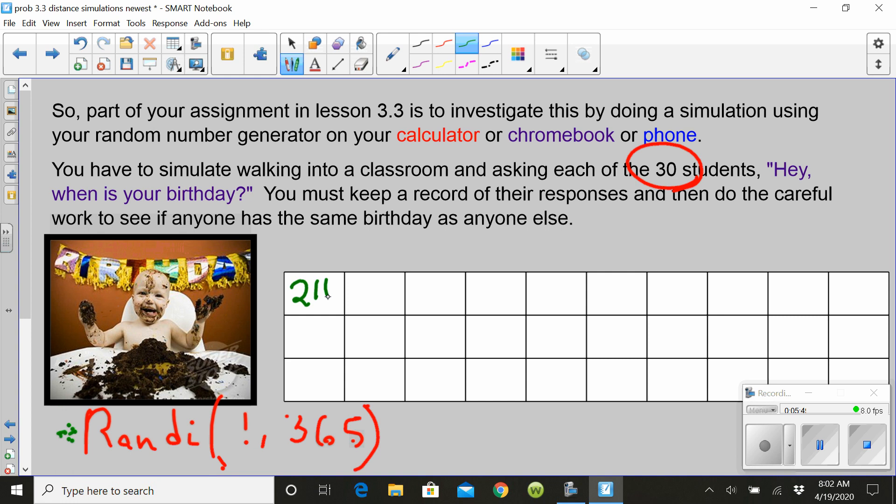Set your calculator on random integers from 1 to 365 and hit equals and write your number down. And then hit equals again and write your number down. Fill in the whole grid with 30 numbers. Each of those numbers, this number 211 is saying that person was born on the 211th day of the year, that's probably down in August or September. And this person was born on the 34th day of the year, I think that would be February 3rd. So you don't have to interpret what month it is, but write down your 30 numbers.